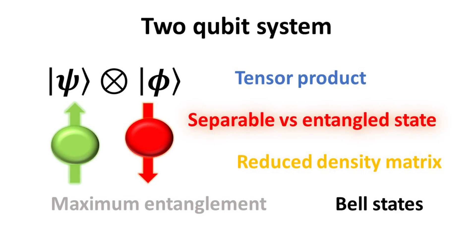Suppose we have a composite quantum system made up of two qubits — how do we describe its state? In this video, we discuss how to describe such a composite system in terms of its tensor product. We define the concept of separable versus entangled states, explain how one can define a reduced density matrix for the subsystems, and from which a measure for the degree of entanglement can be established. We introduce the Bell states, which are two-qubit states with maximum entanglement. Let's begin.